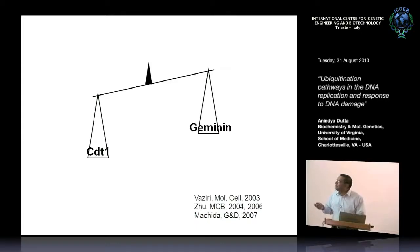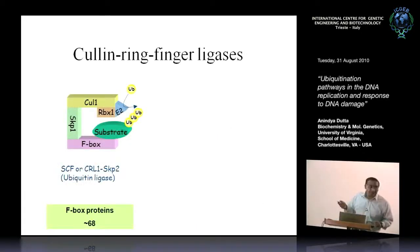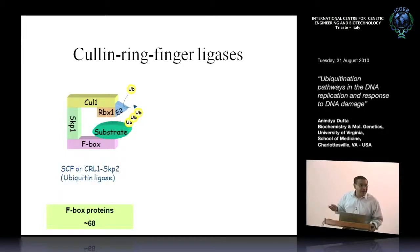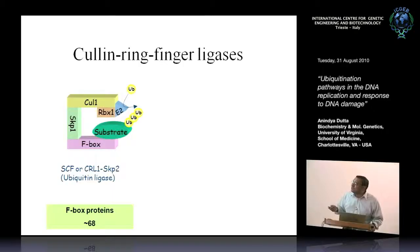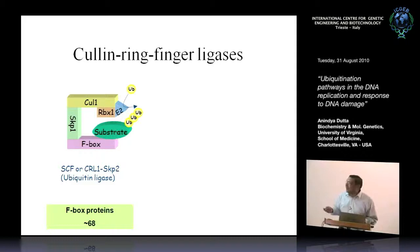So how is CDT1 degraded? I introduce the Cullin complexes, which figure prominently in this story. CUL1 pairs with the bridging factor SKP1 to reach out to a substrate recognition factor called F-box proteins, which brings in the substrate. CUL1 brings in RBX1, which together recruits the E2 with ubiquitin to promote polyubiquitination. F-box proteins are usually substrate recognition adapters of CUL1. I'll talk in passing about an F-box protein that doesn't work in this way, but we'll come back to that.